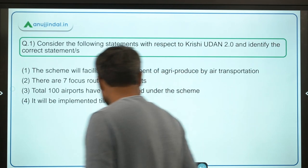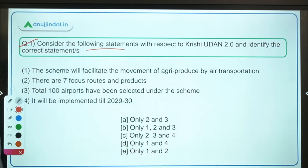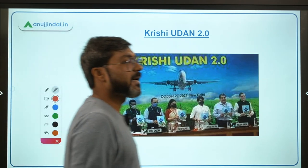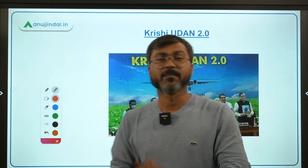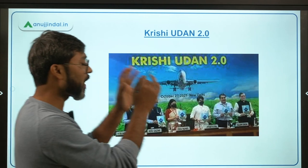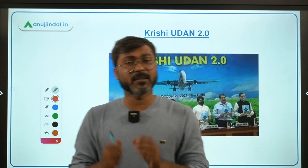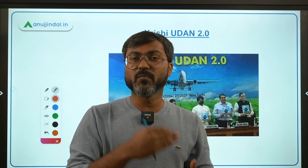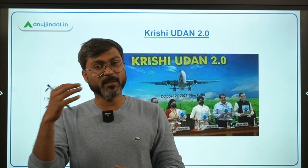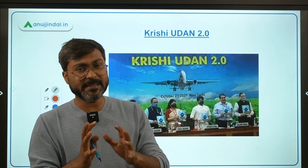Let's talk about the first question regarding Krishi Udan 2.0. The question asks you to identify correct statements about the scheme. This is a new initiative of the Ministry of Civil Aviation. The Ministry of Civil Aviation and the Ministry of Agriculture and Farmers Welfare have together launched Krishi Udan 2.0. As the name suggests, it converges the two sectors — aviation and agriculture — with the basic objective to facilitate the movement of agricultural produce with the help of air transportation.